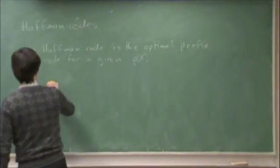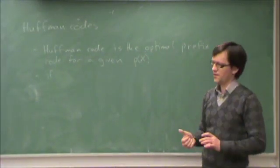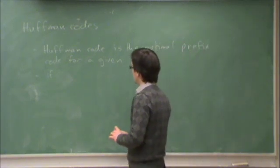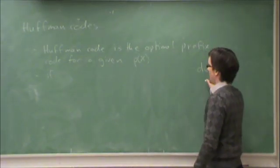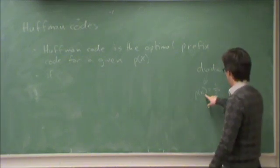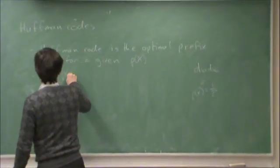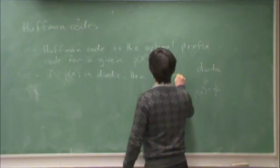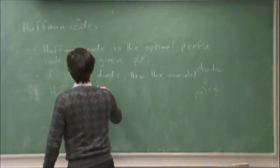Furthermore, because it's the optimal prefix code, remember that if the probability values were equal to inverse powers of 2, a prefix code could achieve entropy. Such a probability density function has a special term called dyadic. Dyadic means p(x) equals 1 over 2 to the n. For each x, there is some n such that each probability is 1 over 2^n. If p(x) is dyadic, then the associated Huffman code achieves entropy.